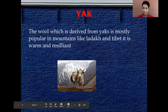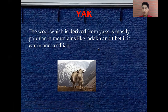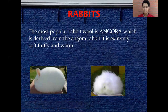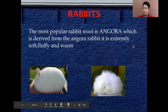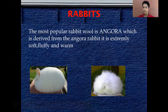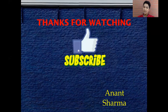The wool derived from yak is mostly popular in mountainous areas like Ladakh and Tibet — it is warm and resilient. The most popular rabbit wool is angora, derived from the angora rabbit. It is extremely soft, fluffy, and warm, and it is a very expensive fiber that is really nice for making clothes.